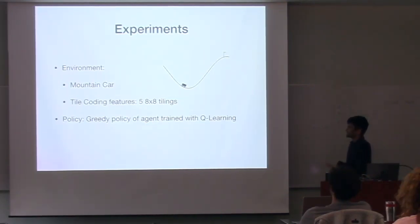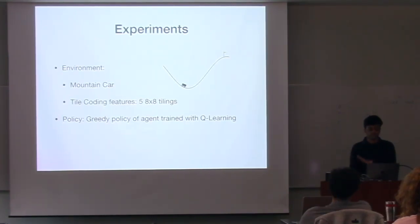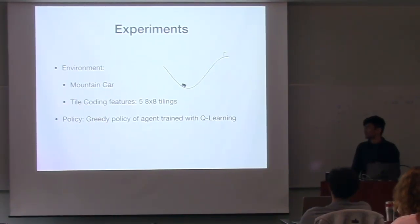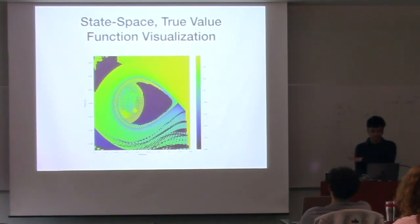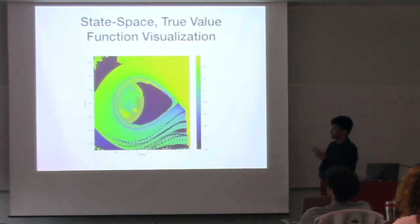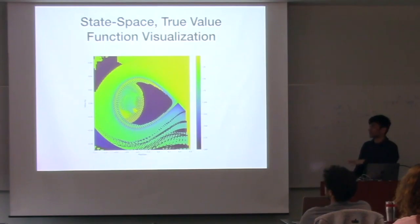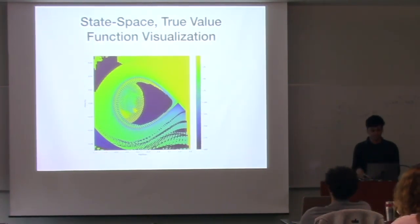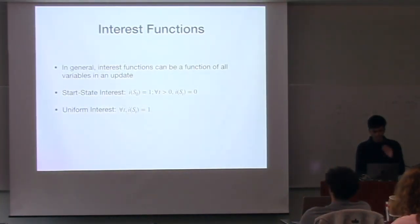Now I'll move on to the experiments I did with emphatic TD. The environment is mountain car with tile coding. The policy is a greedy policy of an agent trained with Q-learning. This is the true value function visualization - I just went through the position-velocity state space and ran the policy to compute the actual value function. It's a greedy deterministic policy.